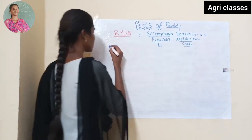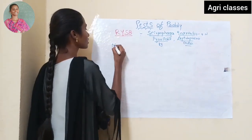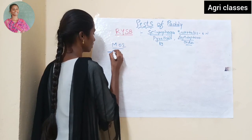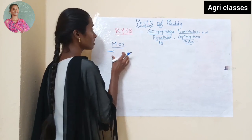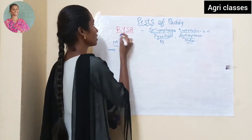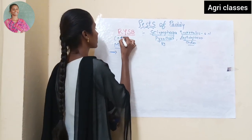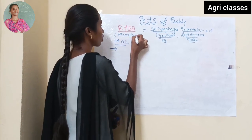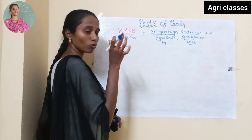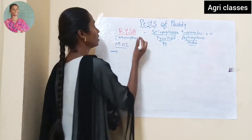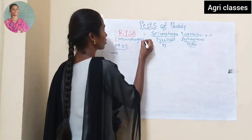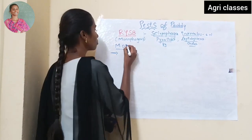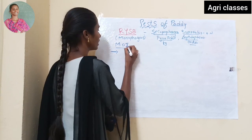The important marks of identification, symptoms of damage, and management will be discussed from an exam point of view. This Rice Yellow Stemborer is a monophagous pest — it will attack and can be seen only on paddy crop. That's why we call it a monophagous pest.